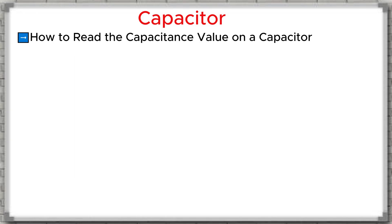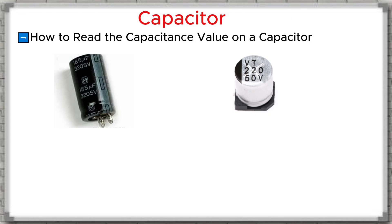How to read the capacitance value on a capacitor: Let's take a closer look at how to read the value of a capacitor. For electrolytic capacitors, they are polarized, they have a negative and a positive lead, they are always cylindrical in shape. The capacitance value of an electrolytic capacitor is usually printed directly on its body. For example, in the image we see an electrolytic capacitor with a capacitance of 185 millifarads and a voltage rating of 320 volts. Another example is a surface mount electrolytic capacitor with a value of 220 millifarads rated at 50 volts.